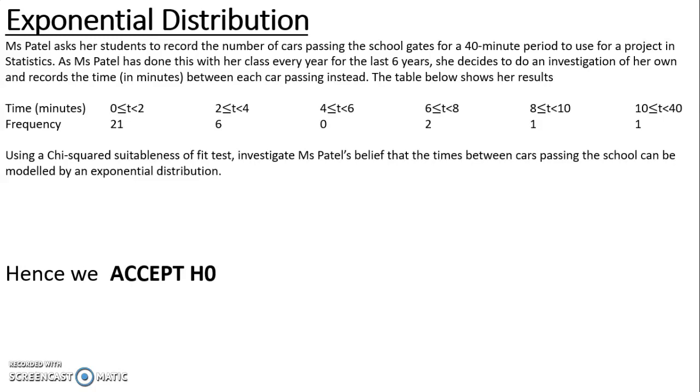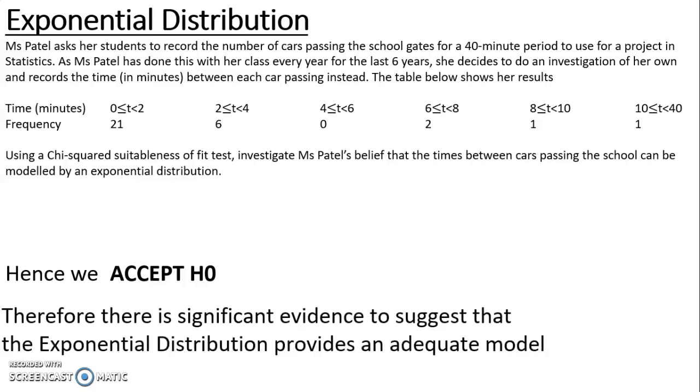So we accept H0. And putting that into the context of the question, looking at my hypotheses, I can say that there is significant evidence to suggest that the exponential distribution provides an adequate model for the times between cars passing the school.